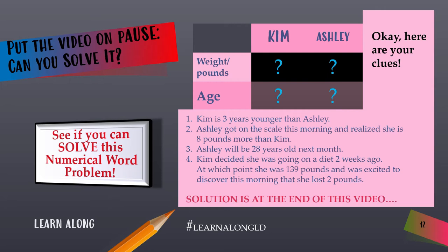Kim is three years younger than Ashley. You want to find Kim and Ashley's weight — meaning they got on a scale and weighed themselves — and also find out their ages. Ashley got on the scale this morning and realized she is eight pounds more than Kim. Ashley will be 28 years old next month. Kim decided she was going on a diet two weeks ago, at which point she was 139 pounds, and was excited to discover this morning that she lost two pounds. The solution is at the end of the video.